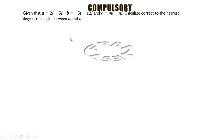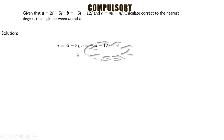Now we have a question on vectors. Given that vector a = 2i − 5j and vector b = −5i − 12j, then vector c = mi + nj. Calculate, correct to the nearest degree, the angle between vectors a and b. We use the dot product formula: a·b equals the magnitude of a times the magnitude of b times the cosine of the acute angle between them.